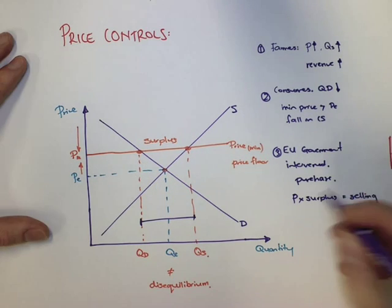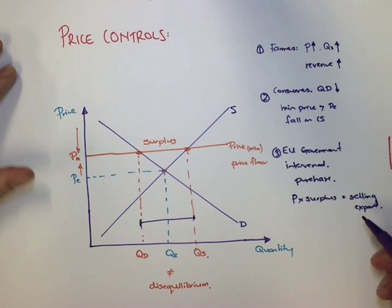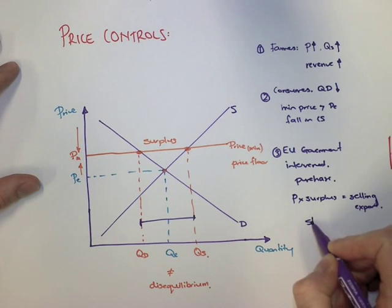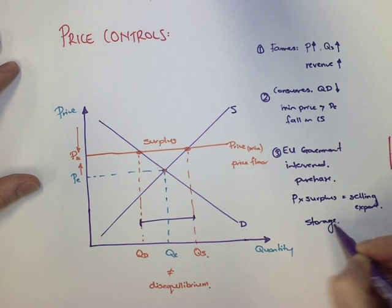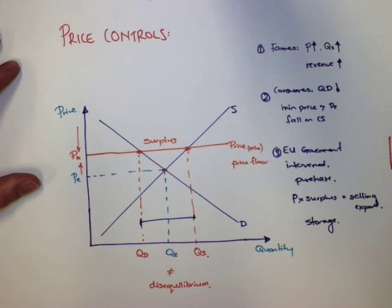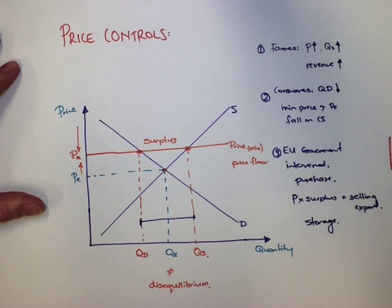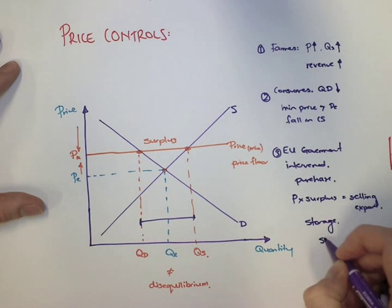There are things like storage costs involved in buying a surplus of products. Sometimes agricultural products can't be stored, and regardless, we say there's a really significant opportunity cost for governments.